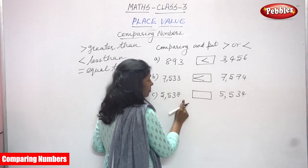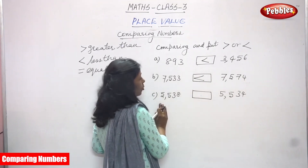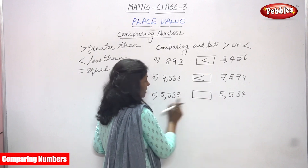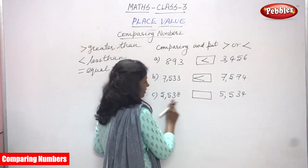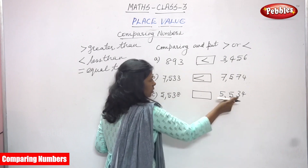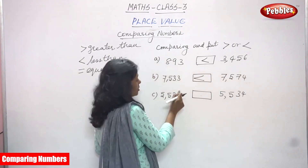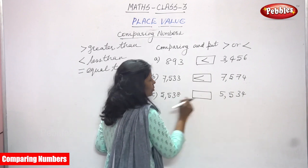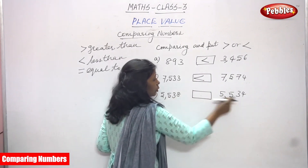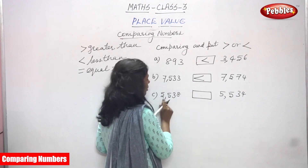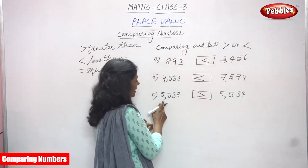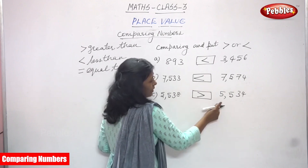When digits are the same you have to compare each and every digit. First I compared the thousands — both five thousand. Next hundreds — both five hundred. Next tens — both three tens. Finally ones: eight and four. So 5,538 is the greater number. 5,538 is greater than 5,534. This is the right symbol — the wider mouth, the greater than symbol.